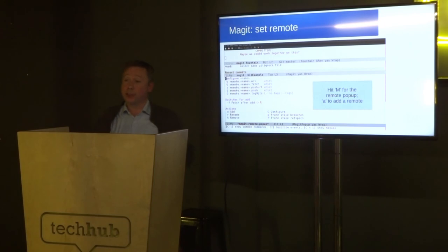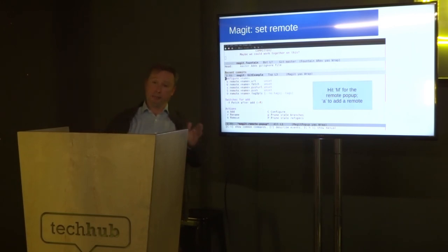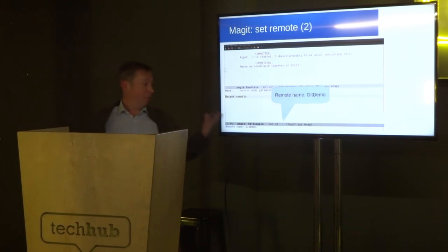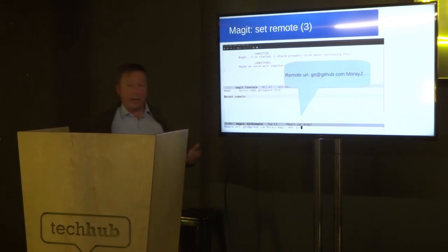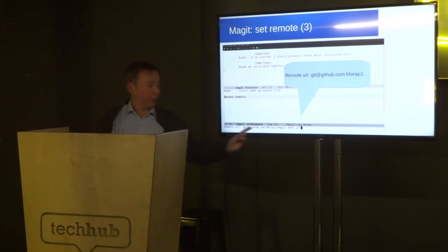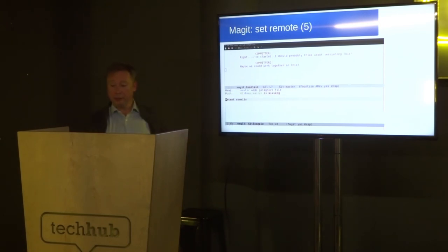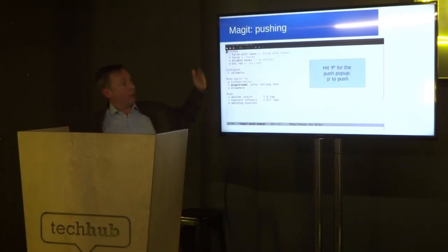This is a capital M instead of lowercase M — lowercase M is merge; capital M is for adding the remote. I've gone to GitHub and created an empty repository just for this demonstration. I then hit A for add, and it prompts me for what I want to call it locally — I've called it git-demo. Then it prompts again for the URL of the Git repository I want to use. It asks for confirmation again — perhaps it's a bit hand-holding, but maybe that's nice. So there's nothing in the remote yet, so it's telling me master is missing, but it has created the remote.